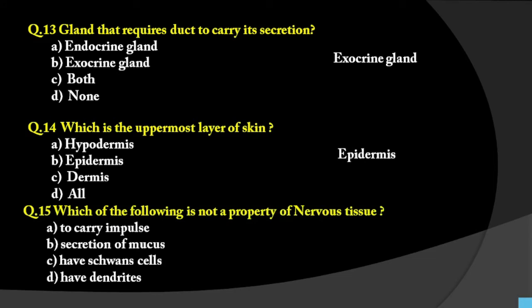Question number 15: Which of the following is not a property of nervous tissue? Options are: to carry impulse, secretion of muscles, has Schwann cells, and has dendrites. From the neuron structure, it carries impulses, has Schwann cells, and has dendrites. But nervous tissue does not do secretion of muscles. That is not its property. So the answer is option B — secretion of muscles.